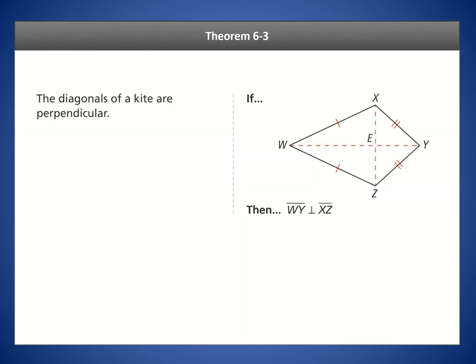We're going straight to kites and the first theorem of the lesson, theorem 6.3. This theorem states that the diagonals of a kite are perpendicular. In a kite you have two non-congruent diagonals — the major diagonal, which is usually the longest, and the minor diagonal, which is the shorter one. When they intersect, they do so at a right angle.